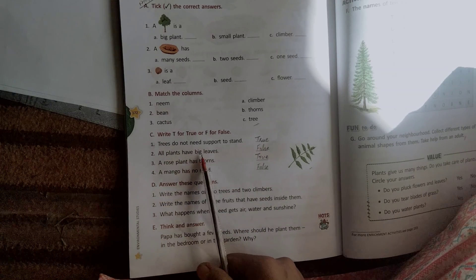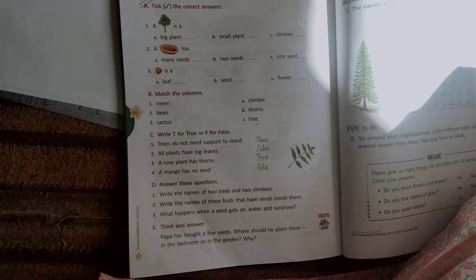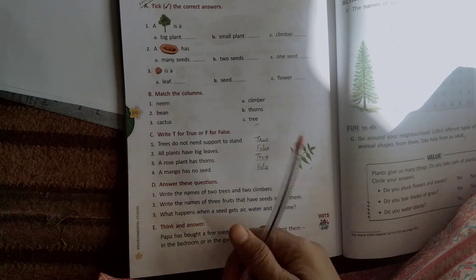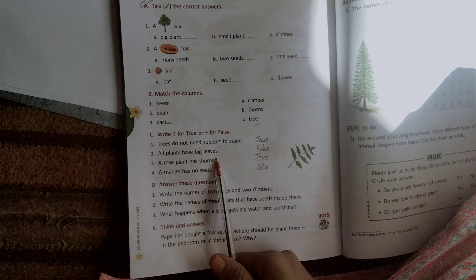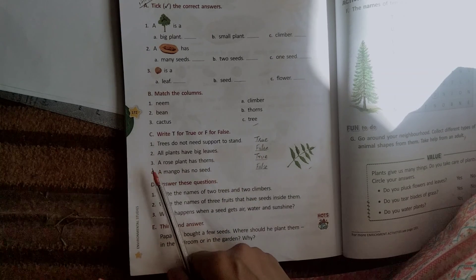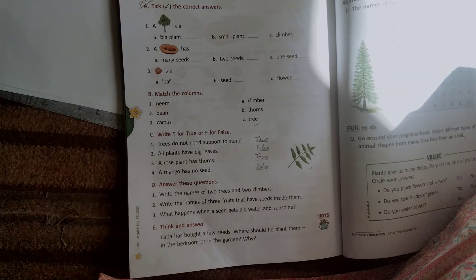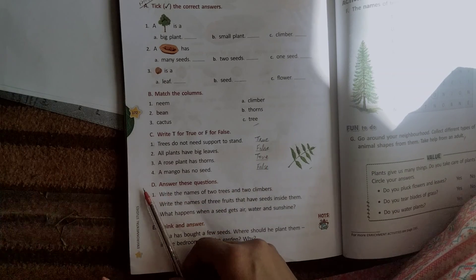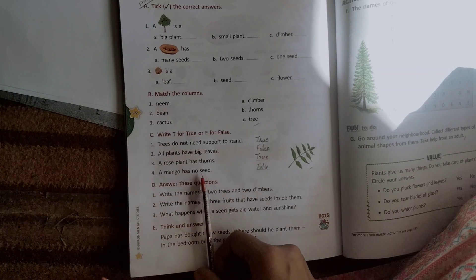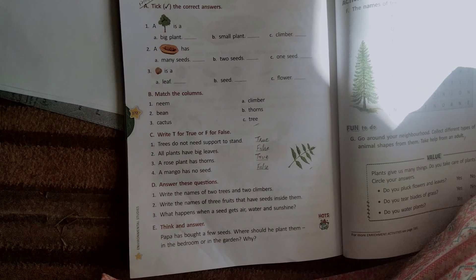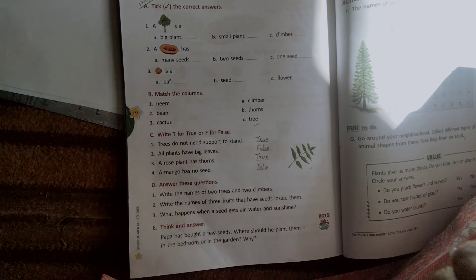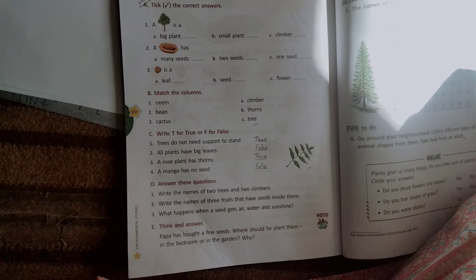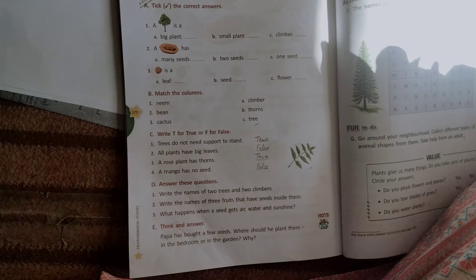Second, all plants have big leaves. All plants have big leaves? I mean, they have big leaves? Some plants have small leaves. Some plants have big leaves. But everyone has big leaves? So let's write here. There is no seed. First, the rose plants have big leaves. This is true. The rose plants have...